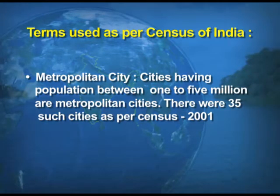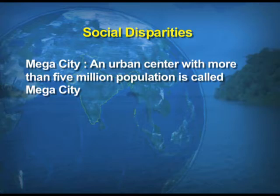Metropolitan cities are cities having a population between one to five million. As per the 2001 census, there were 35 such cities where the population ranged between one to five million. A mega city is an urban center with more than five million population.